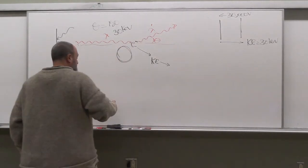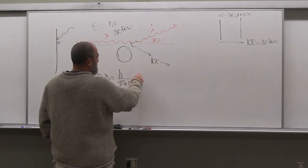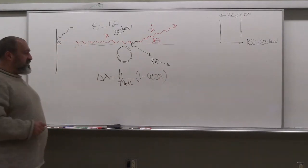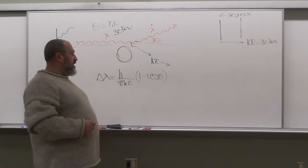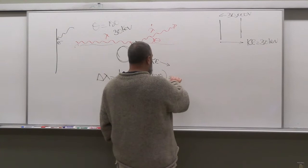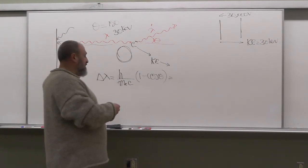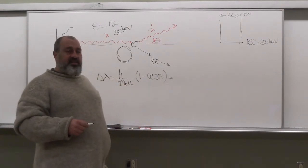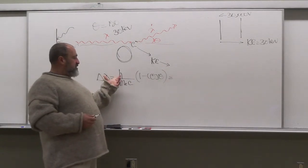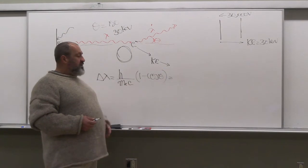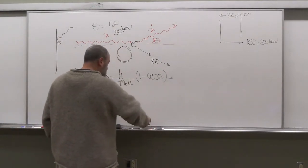So delta lambda is equal to h over mₑc times one minus cosine theta. You see that you don't need the incoming energy to figure out the changing wavelength. It depends on theta. Then we say that that's equal to what? H is, well, you can do this the messy way. You can put, what is h? 6.63 times 10 to the minus 34. Mass of the electron is 9.11 times 10 to the minus 31 kilograms. And all that is on the formula sheet. And c is 3 times 10 to the 8. You can put all these numbers in. But I want to show you how to do this using the new system of units as well. Take a minute and put down 6.63 times 10 to the minus 34, mass of the electron, look it up, speed of light. Put them in there. You have theta.